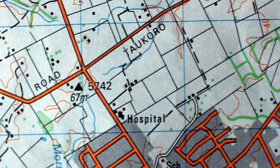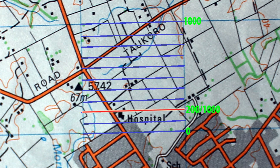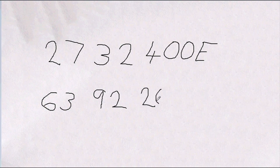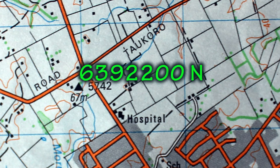Now I will divide the square by 1,000 again to get my final three figures, but this time vertically. The hospital is 2 tenths of the square, or 200 out of 1,000. Therefore the last three numbers will be 200. The full Northing for the hospital will be 6392200 North.